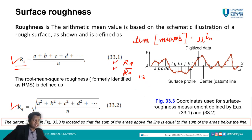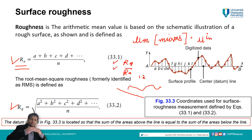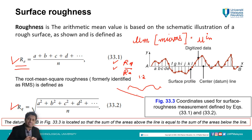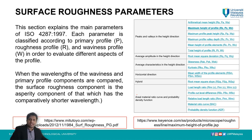Ra and Rq alone are not enough. Lay, waviness, and directional characteristics are also important. Two surfaces might have the same surface roughness, but because of differences in surface texture — the lay, the flaws — different properties are expected. For instance, the friction between two materials might be different even though the surface roughness is the same, affecting friction coefficient, fatigue, and wear characteristics.